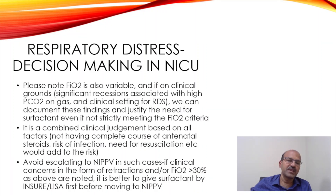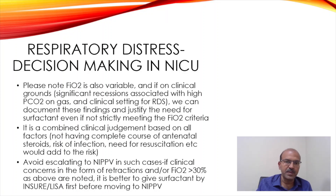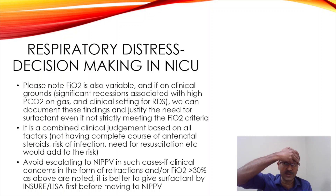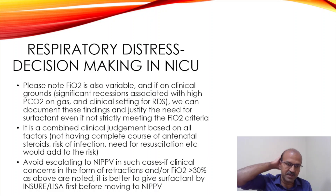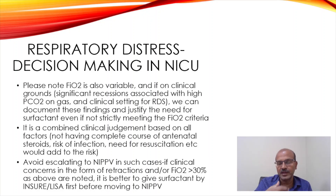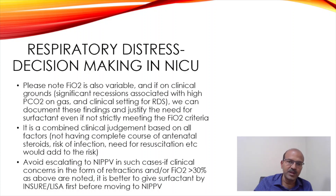Remember that FiO2 is variable. The same baby can quickly start developing slight shunting in a PPHN-like scenario, and the FiO2 can rise. So if there is respiratory distress even with a PPHN scenario and an RDS-like picture, you can give surfactant — that might improve things because it's all linked to each other.